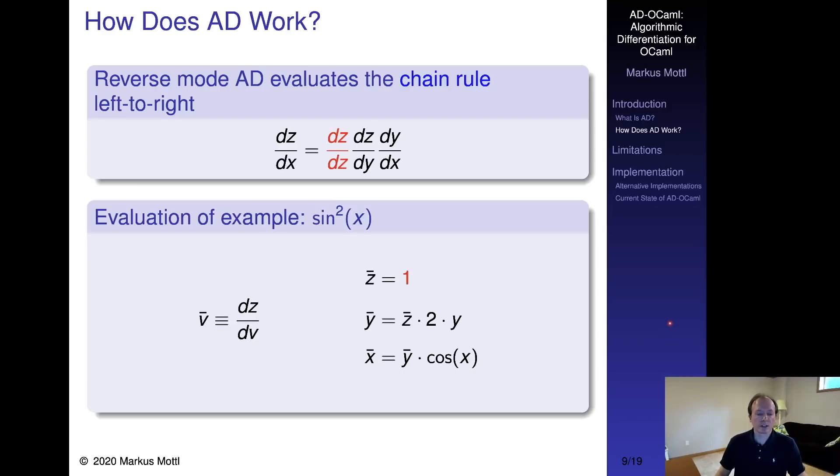Reverse mode AD benefits from introducing the concept of an adjoint. The adjoint of a value is simply the derivative of the whole program with respect to that value. It will be propagated from the end of the program through all intermediate values to the beginning to calculate the complete gradient in one go.